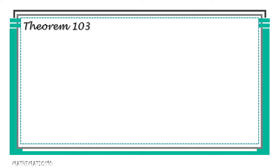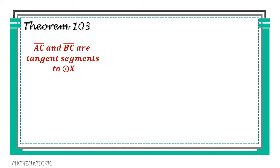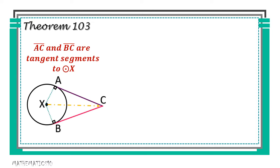To further understand theorem 103, let us have this example. Given: segment AC and BC are tangent segments to circle X. As you can see, our external point here is point C. Segment AC and BC are considered tangent since these two segments intersect the given circle at exactly one point. For AC, it intersects the circle at point A, and for BC, it intersects the circle at point B.